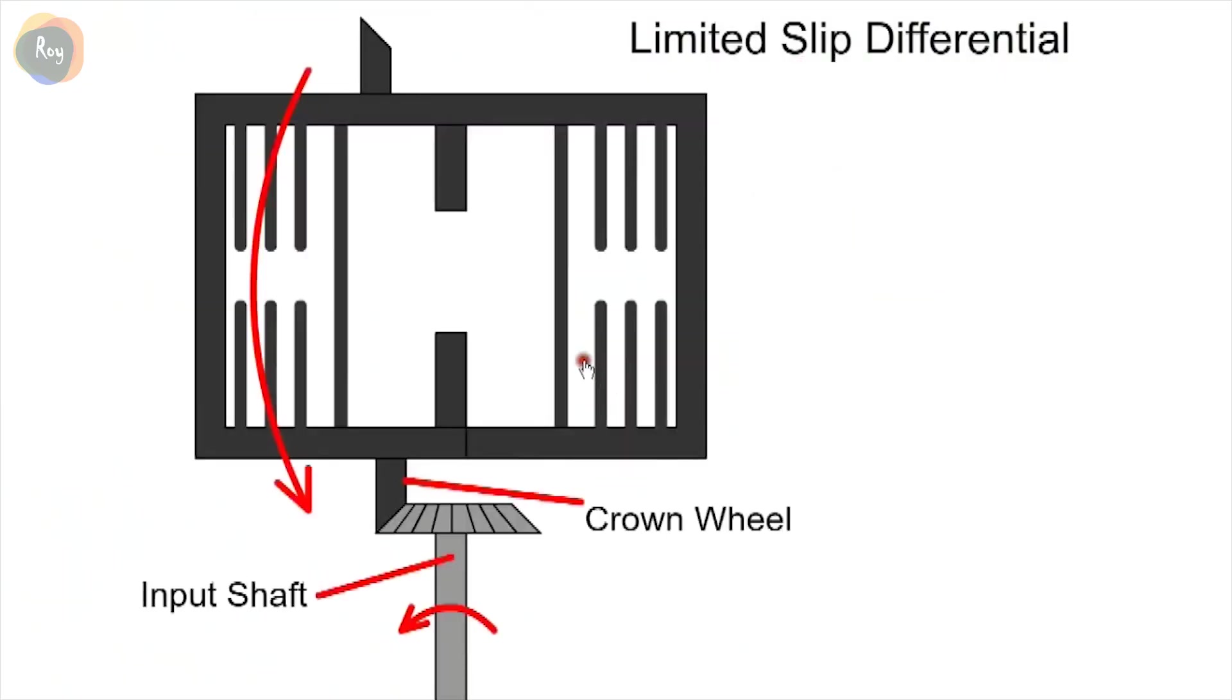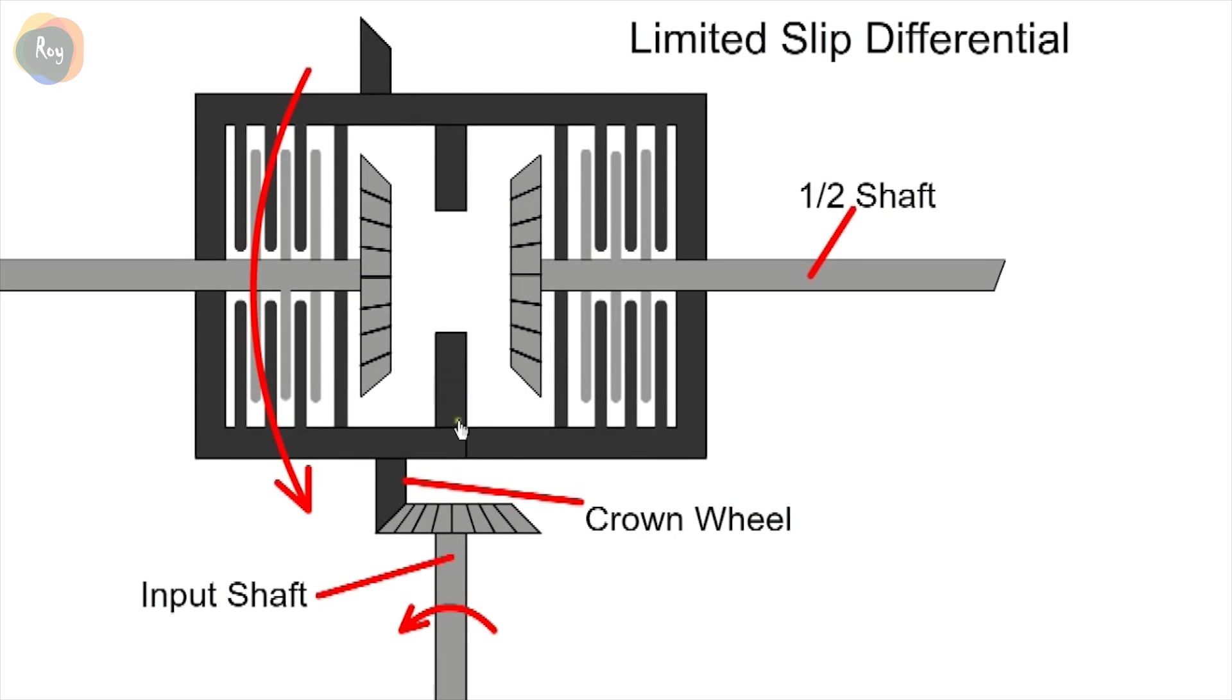Another option is the limited slip differential LSD. They allow for a difference in speed when cornering, but limit slip during low traction conditions. With a viscous type LSD, the input pinion drives the crown gear and cage. The cage rotates and drives the sun gears with the planet gears.